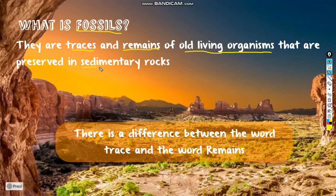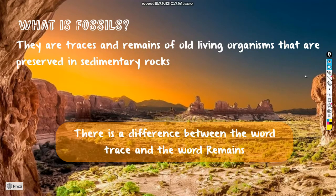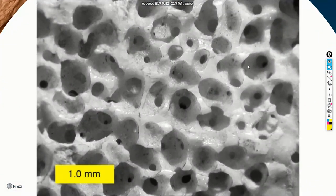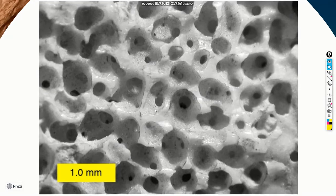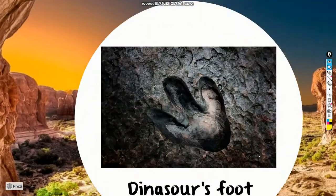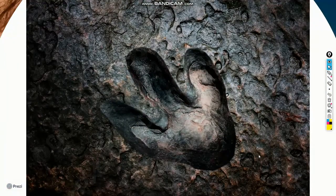They are preserved in sedimentary rocks. There is a difference between the word 'trace' and the word 'remains.' Traces of an old living organism indicate its activity during its life, like the worm tunnel that you can see in the picture — this is the worm tunnel — or the dinosaur footprint as you can see in the picture. These are called traces.